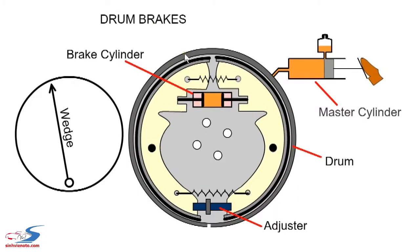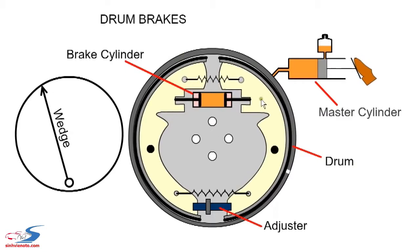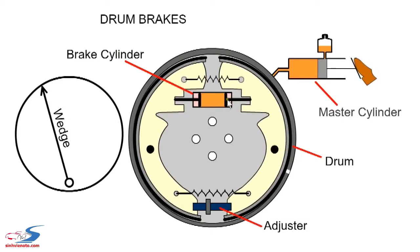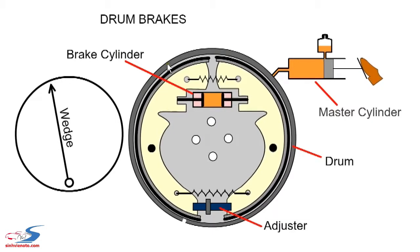Drum brakes consist of an outer drum, which the wheel is attached to, and the inner brake shoes. When the pedal is pressed, the high-pressure fluid forces out the two pistons in the brake cylinder, pressing the shoes against the drum.